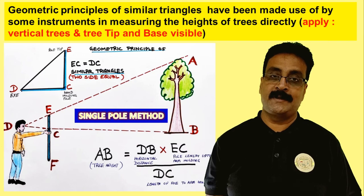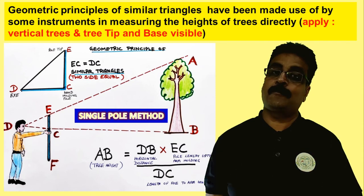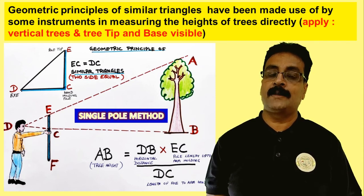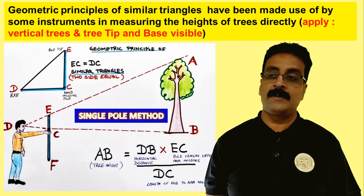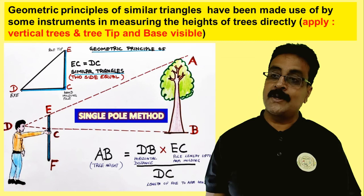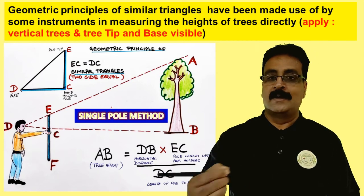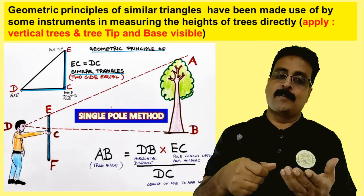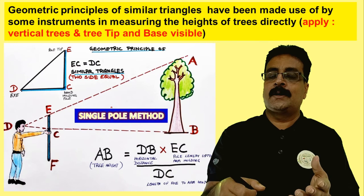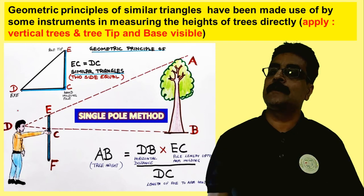We must be clear that these methods are for vertical trees. Very rarely are trees perfectly vertical, but when trees are vertical we assume them vertical and then take the height using hypsometers based on geometrical principles. In the previous lecture we studied the single pole method, which is also based on a similar triangle. A forester can take one pole and without much calculation, by measuring two simple lengths, make two lengths of the triangle similar.